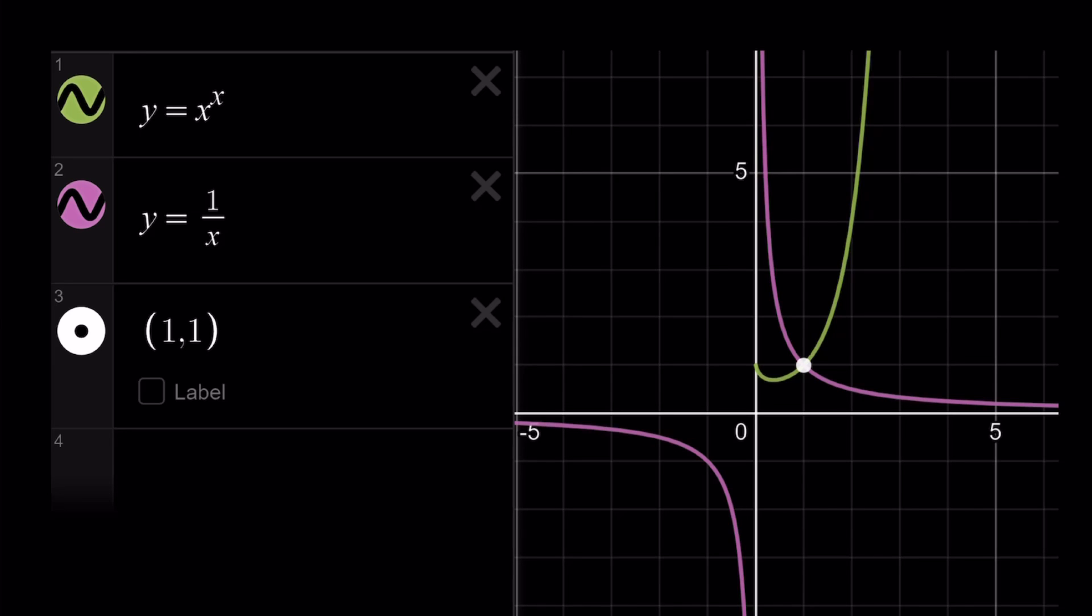So, we don't care because when x is negative, when you have something like x to the x and x is negative, this is very problematic. It's not well defined. Because when you have negative 1 to the power 1 half, suppose you have something like this, or negative 1 to the power, I shouldn't say negative 1 to the power 1 half. That doesn't work because it's x to the x.